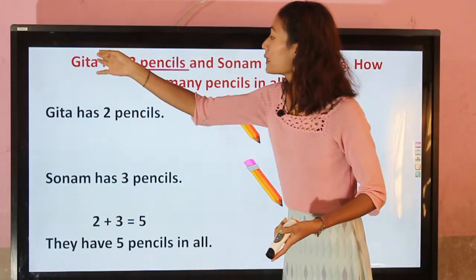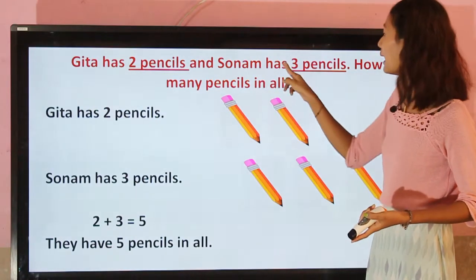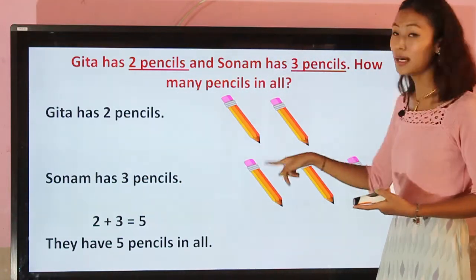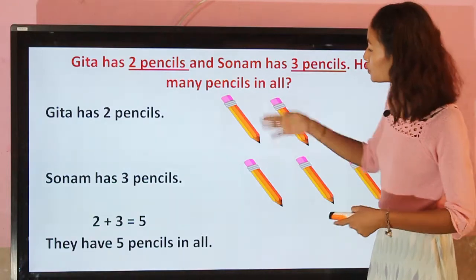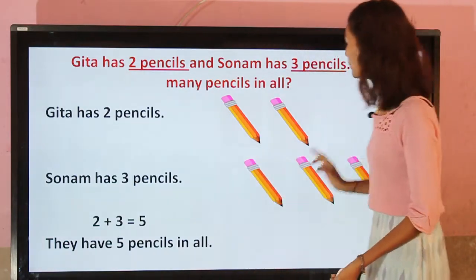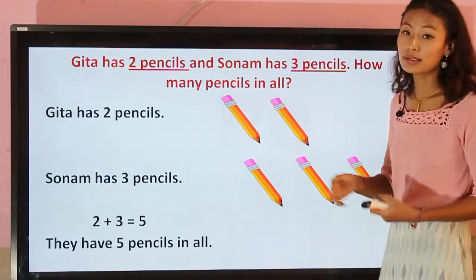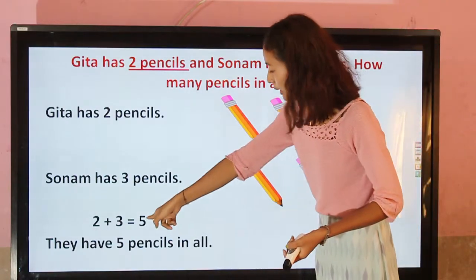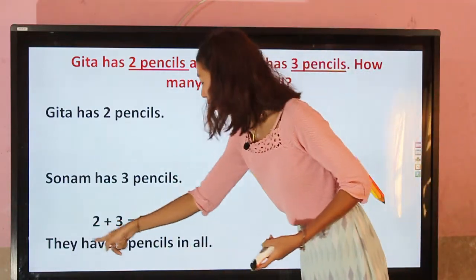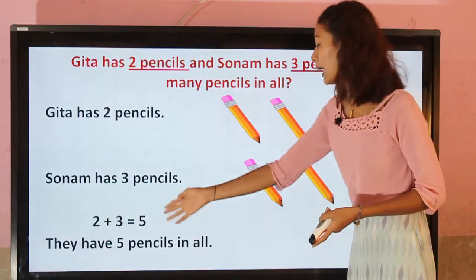Let's review: Gita has two pencils and Sonam has three pencils. We draw the pictures and count: one, two, three, four, five. So they have five pencils in all. That is our complete answer sentence.